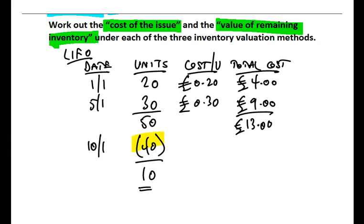Now under LIFO, the last in is the first out. So when we're going to get the 40 bananas to sell to a hungry customer, well, the last in was the 30 bananas that we bought on the 5th of January. So again, if I show a little working so I can be scribbling this down on a piece of paper,